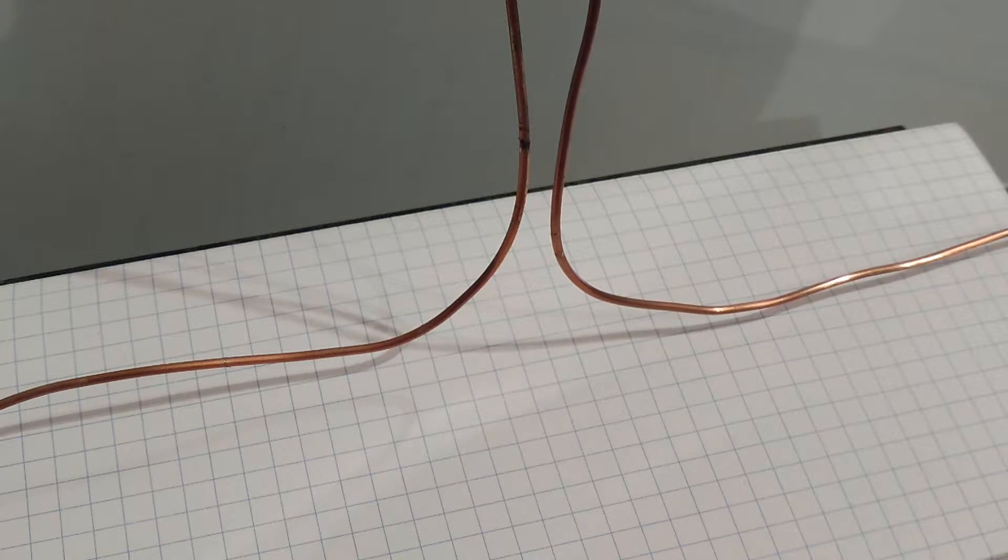Now the arc ionizes the air, which becomes plasma. Now plasma is a state of matter. The three other states of matter that we know of are solids, liquids, and gases. So plasma is sometimes called a fourth state of matter.